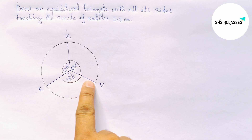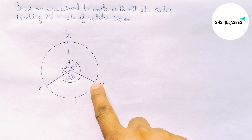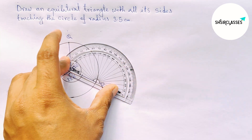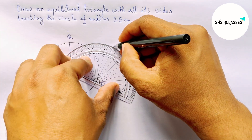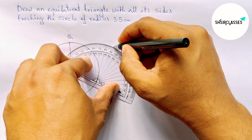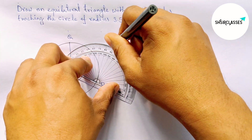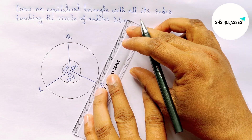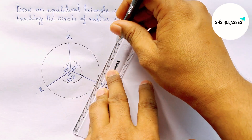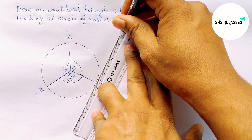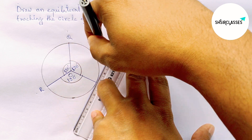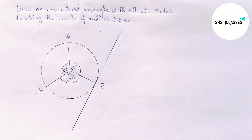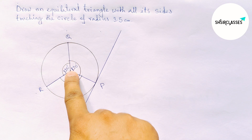Next, draw a perpendicular line at point P with the help of a protractor. Mark 90 degrees at point P on radius OP, then join it. This gives a perpendicular line at point P on radius OP.